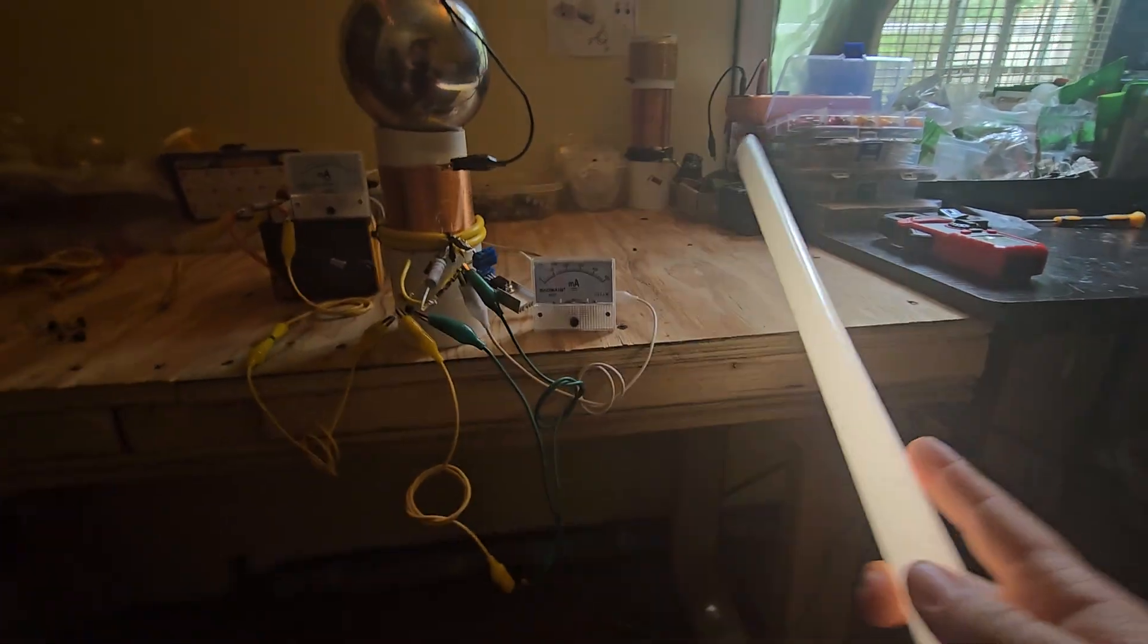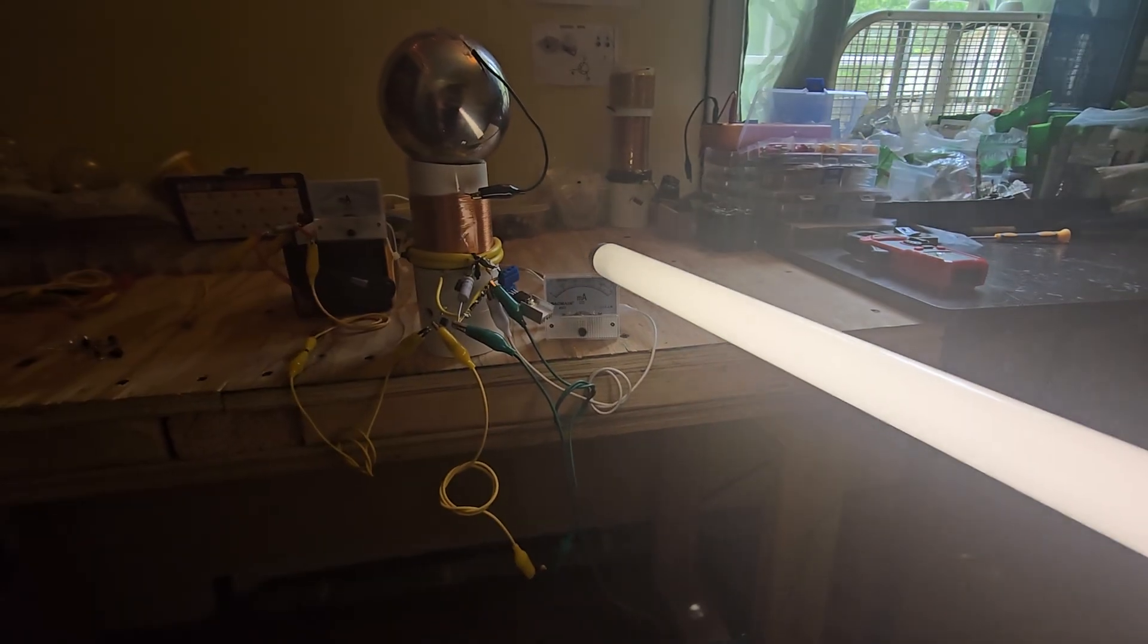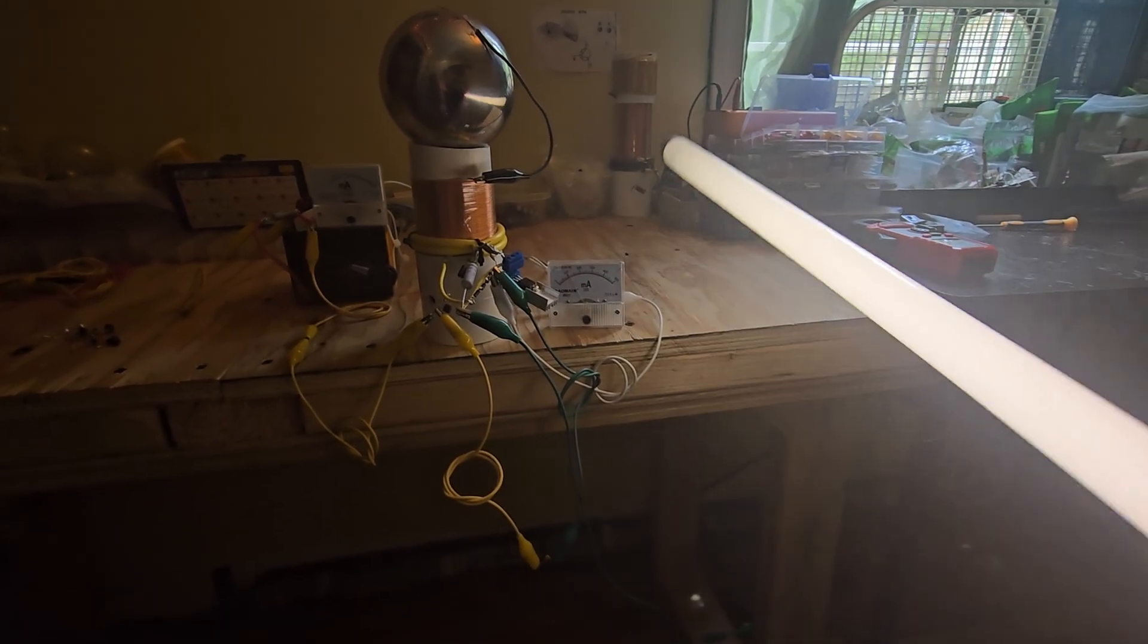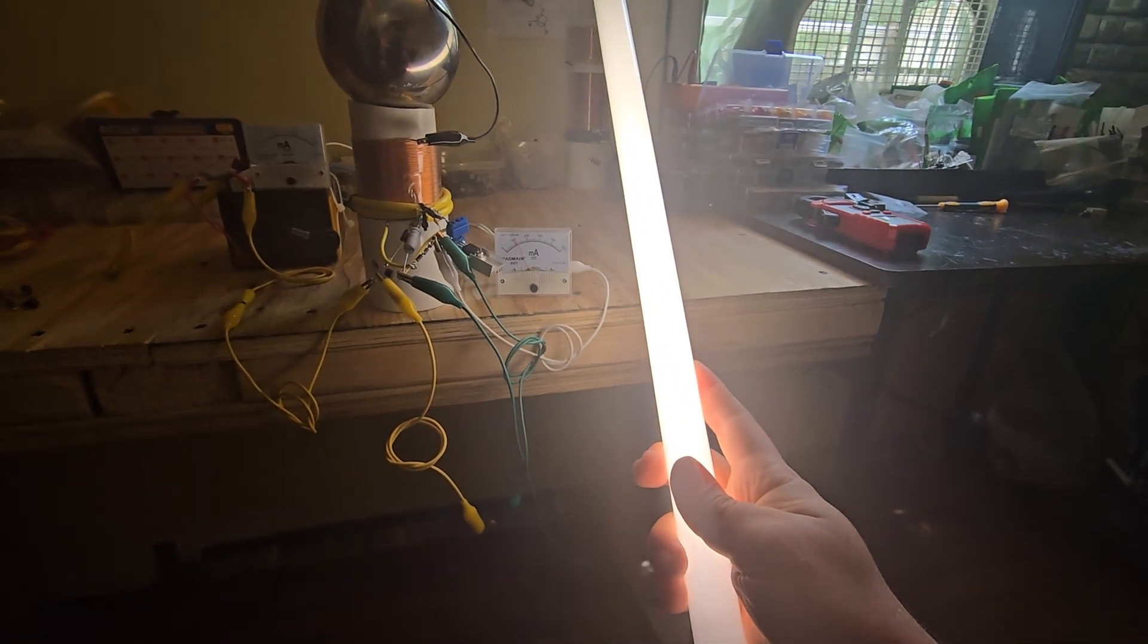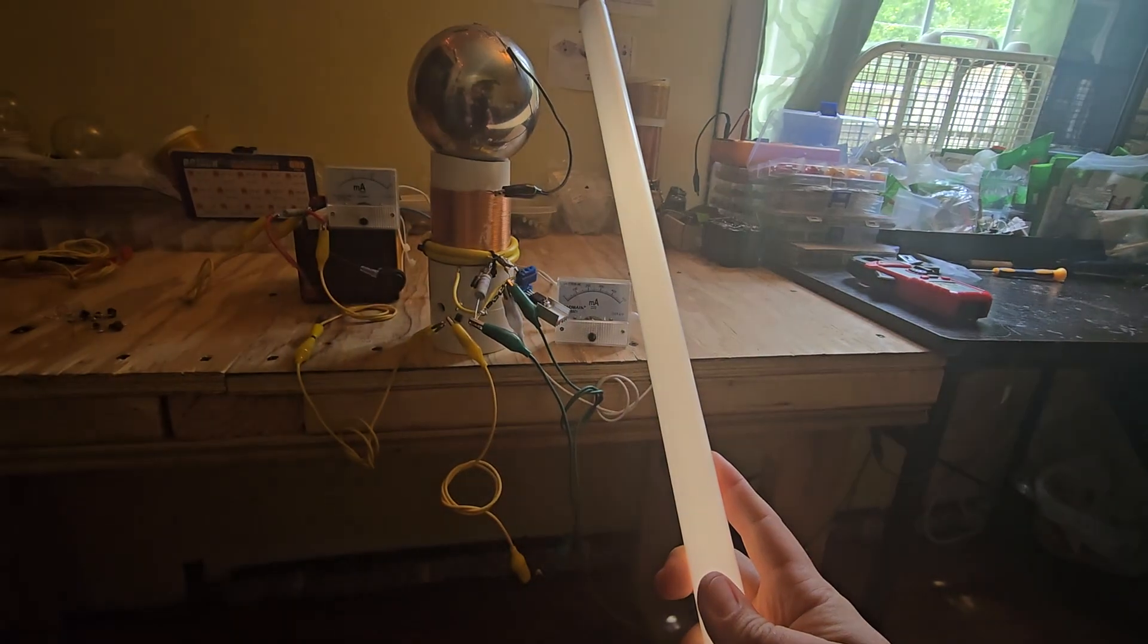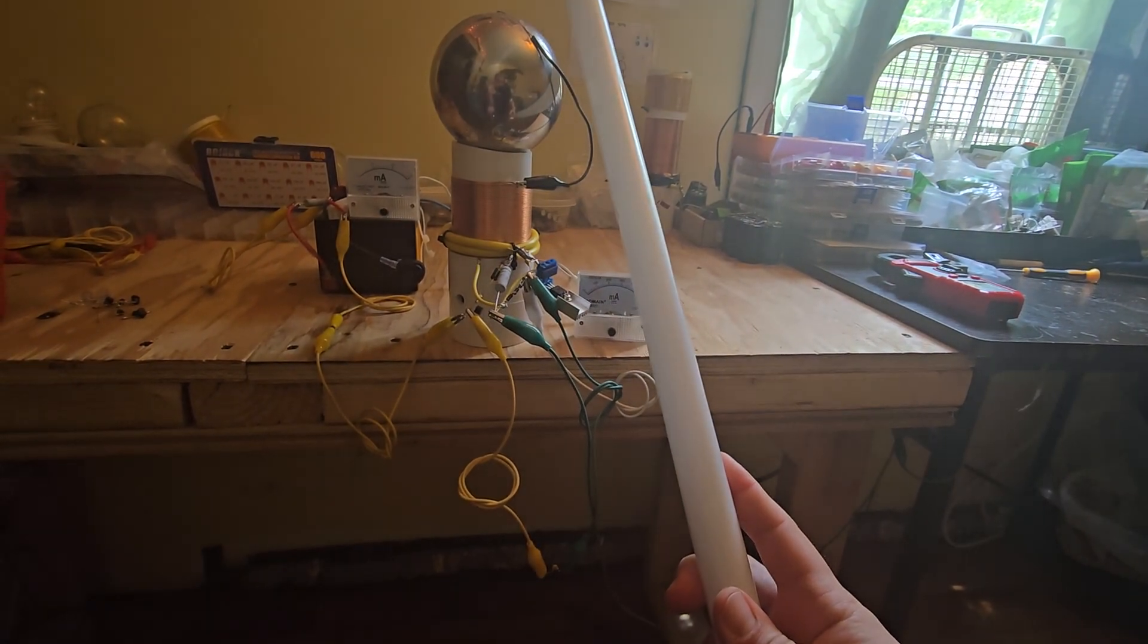And notice how this is a current meter reading the coil's current consumption. Notice how if I touch the bulb to the coil, it gets very dim and goes out.